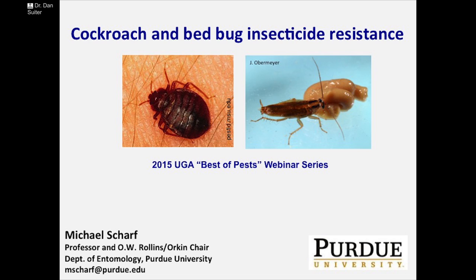Well, thank you, Angie. This presentation will be for those of you who do cockroach and bed bug work, which would be every one of you. Let me introduce Dr. Scharf. I've known Mike now for probably 20 years. Dr. Scharf is currently the O.W. Rollins Orkin chaired professor in the Department of Entomology at Purdue University in West Lafayette, Indiana. His research program focuses on basic physiology, toxicology, and applied aspects of urban pest biology, mainly termites and cockroaches.